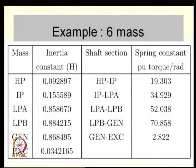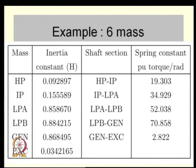Before we try to understand the properties of the electrical network — in the previous class we have modeled the network — we shall just go through that again. Let us take an example of a six-mass system: there is a high pressure turbine, an intermediate pressure turbine, two low pressure stages LP-A and LP-B, a generator, and a rotating brushless excitation system.